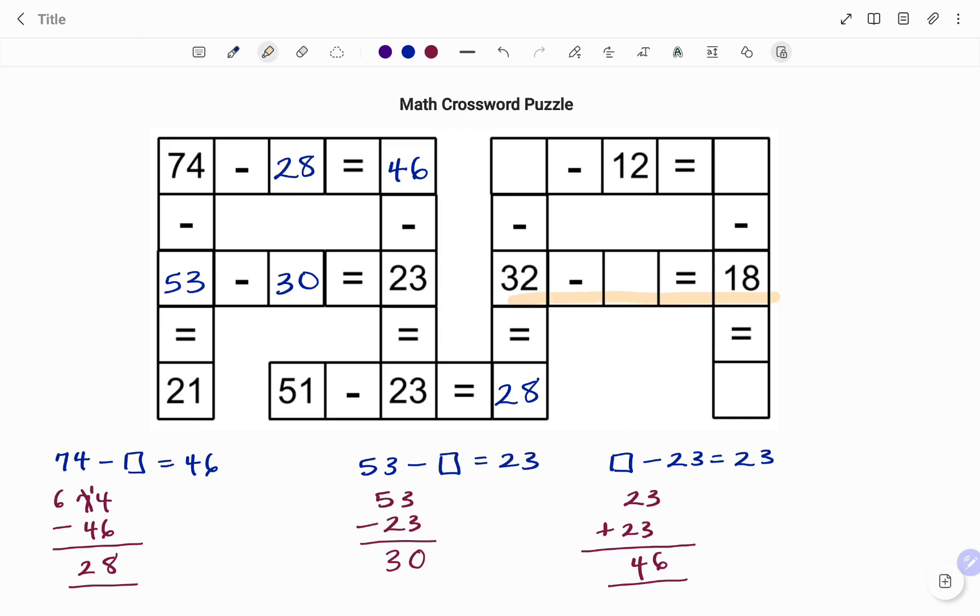The next row I'm working with says 32 minus something equals 18. To get the content of my box, 32 minus 18. I regroup. 1 from 3, that's 2. This becomes 12. 12 minus 8, that's 4. Then 2 minus 1, that's 1. So therefore, I have the content of my box to be 32 minus 14 equals 18.